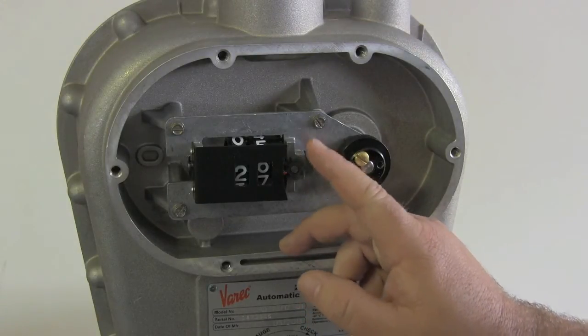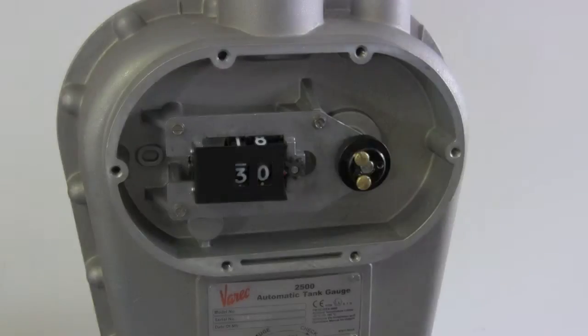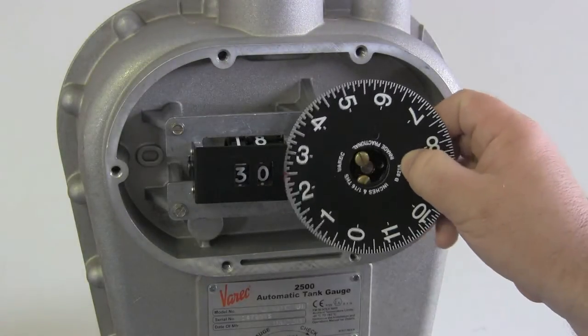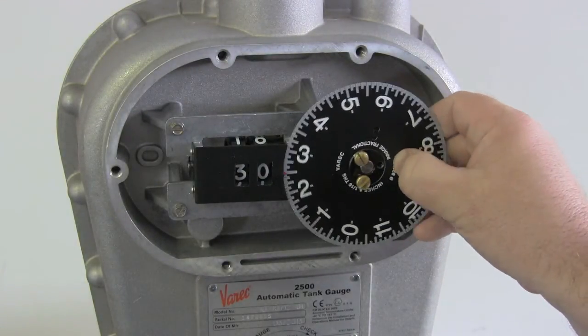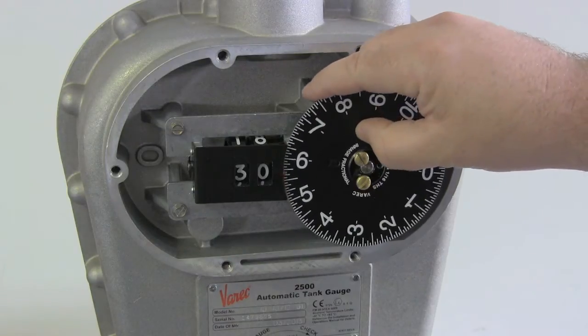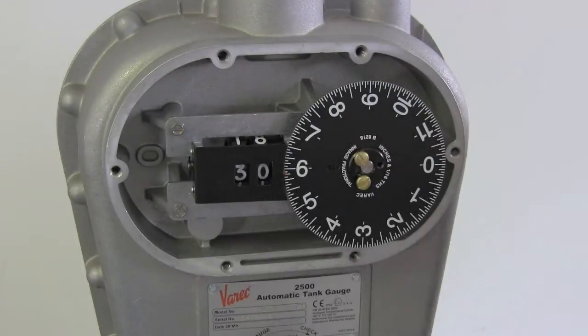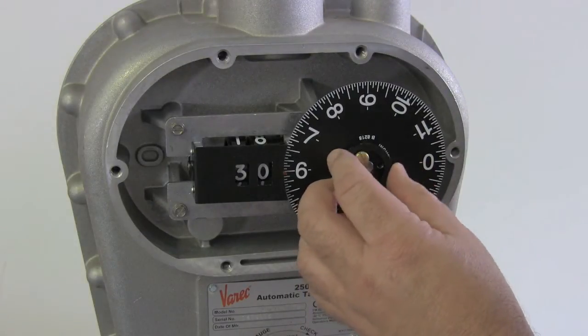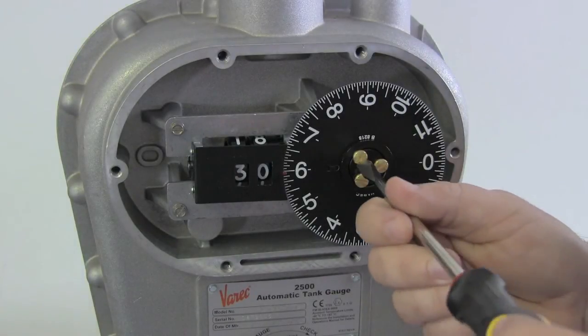Now turn the small pinion gear as needed to adjust the counter. Place the dial and holder back on the shaft and turn it to the reading you need. Make sure the dial stud is aligned with the hole in the holder. Replace the retaining ring. Replace and tighten down the brass screws.